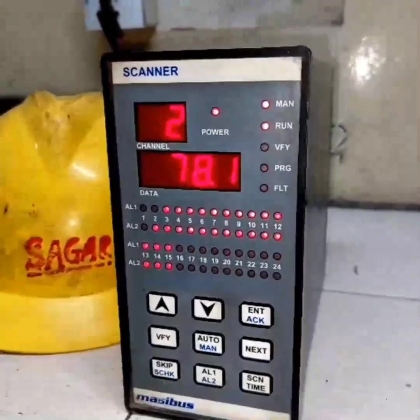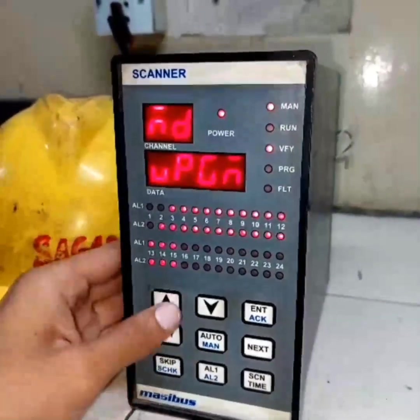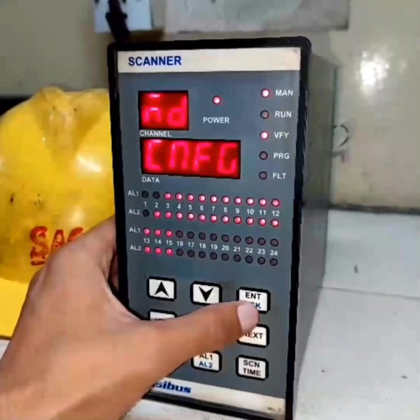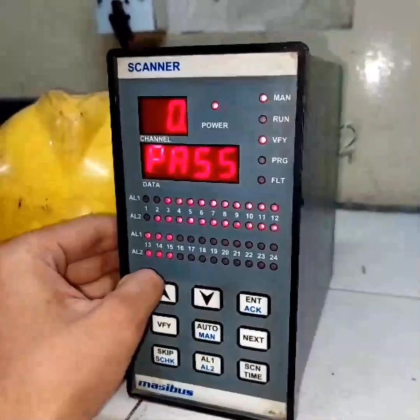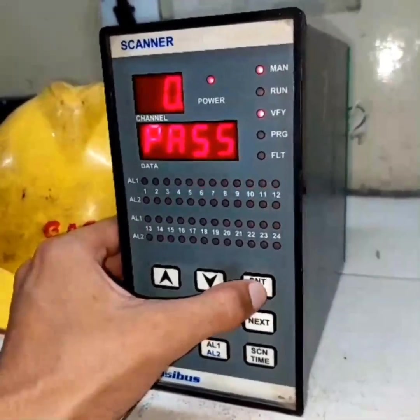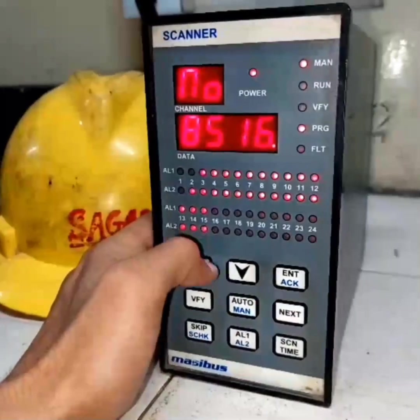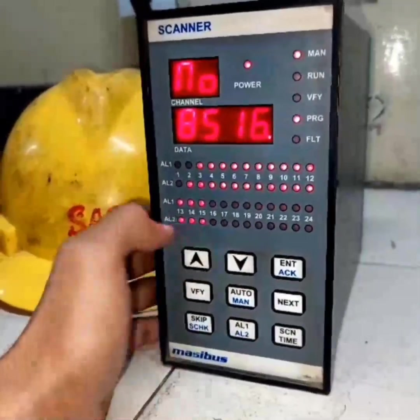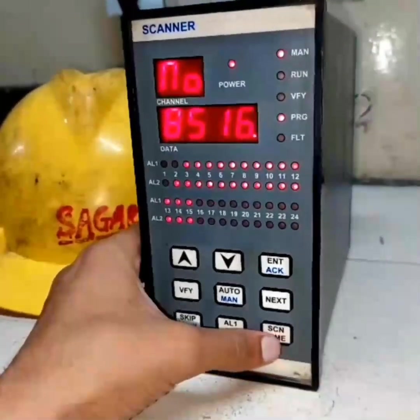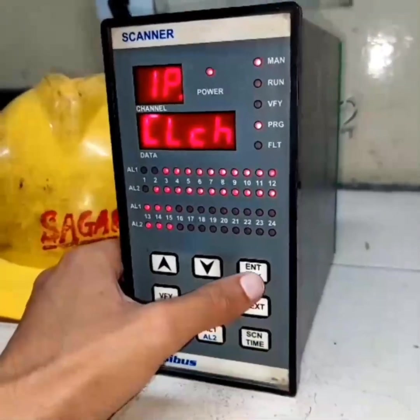Now I am going to show how to calibrate this. First of all, press VFI. Using the up key, come to CNFG and then ENT. It is asking for password—here it is zero, so I am pressing enter again. Now it is showing ENT 8516. Here you can change the channels you want to use. We are using 16 channels, so I am not changing it. I am going directly into calibration mode. For that, you have to press SCN time. Then it is showing IPCLCH. You have to press enter and then next.